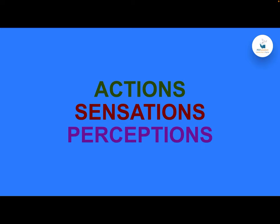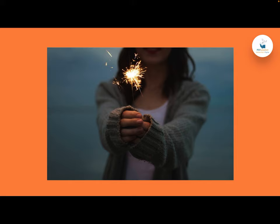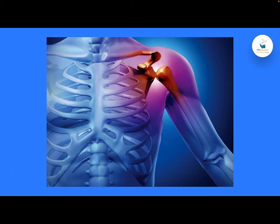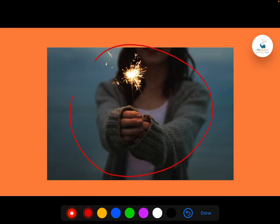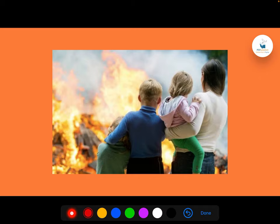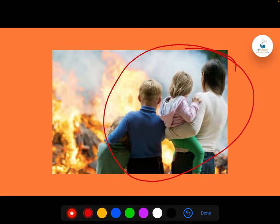Corresponding to these three layers, we have actions, sensations, and perceptions respectively. For illustration: suppose I touch fire — that is a physical action which brings some chemical change physiologically. And that brings a psychological perception that the fire is hotter than normal.